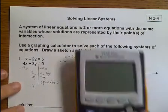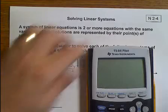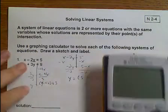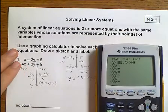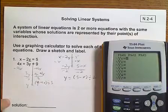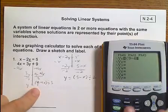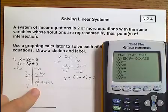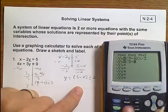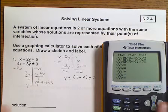So we pull out our graphing calculator. We go to y equals, clear out whatever may be there, and start writing our equations. Let's do the first one. Parentheses 9 minus 4x, close it, divided by 3. And parenthesis 5 minus x, close, divided by 2. Then we go to graph.